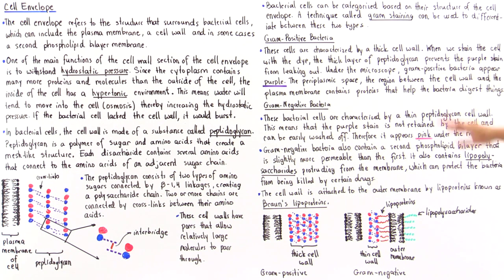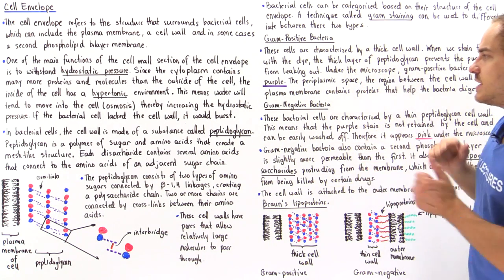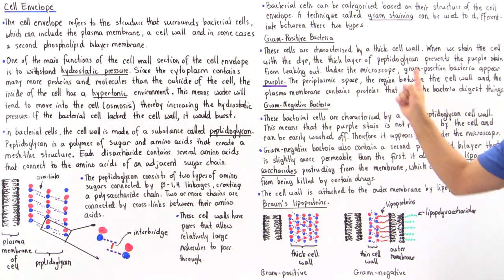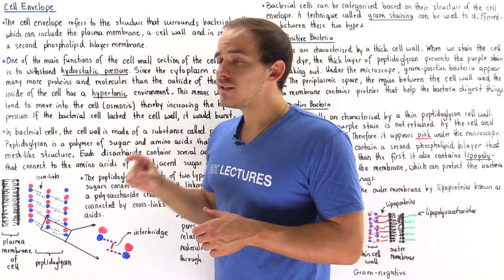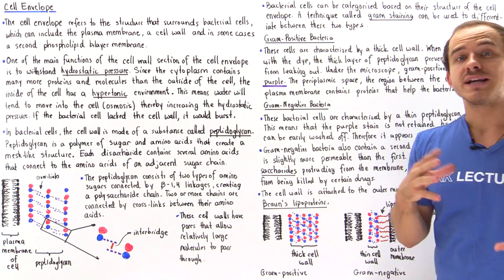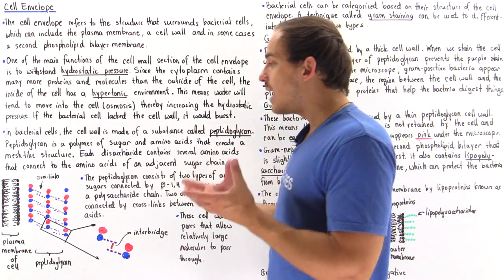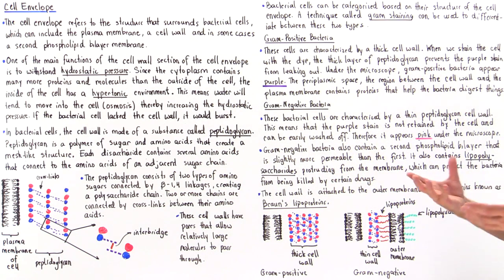Under the microscope, gram positive bacterial cells appear purple. In both types of cells, the periplasmic space contains important hydrolytic enzymes that break down different types of molecules, which are then ingested into the cell so that the cell can function properly.